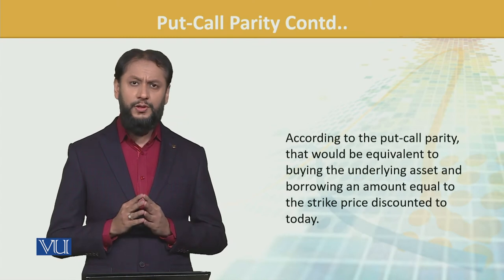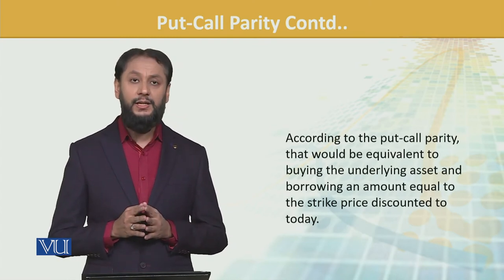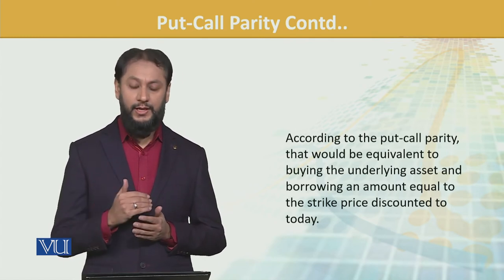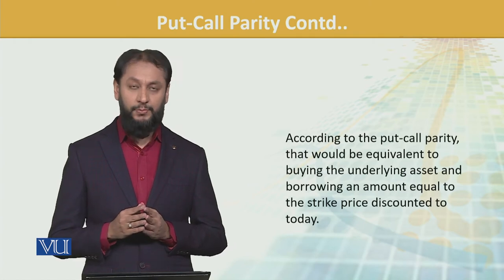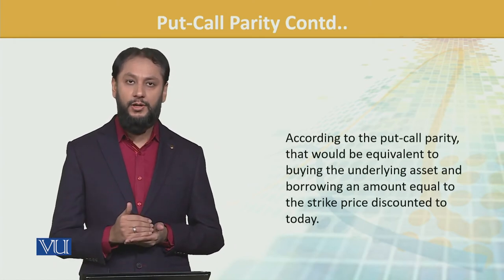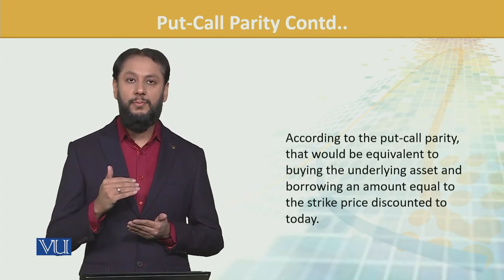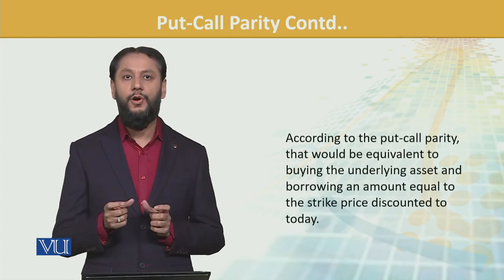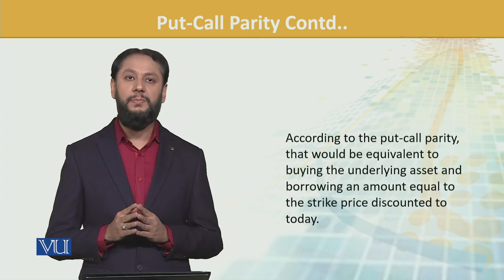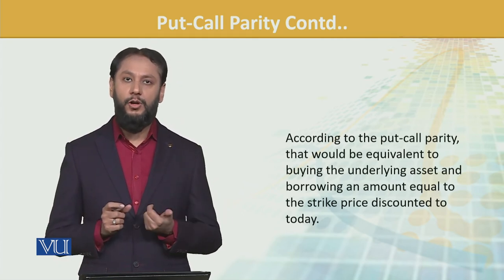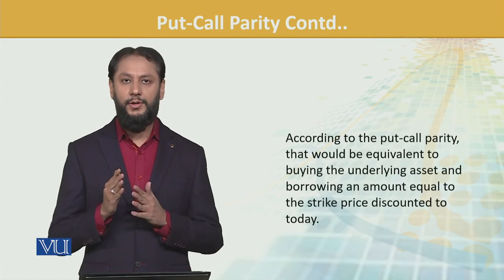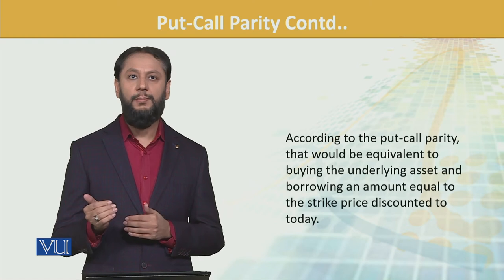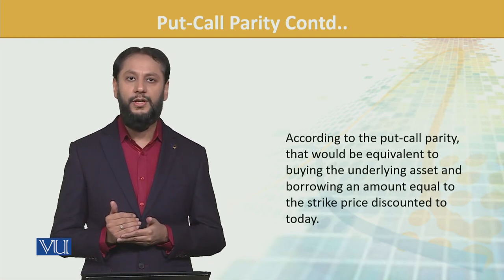According to put-call parity, this would be equivalent to buying the underlying asset and borrowing an amount equal to the present value of the strike price discounted today. The first component is: bought the call option, sold the put option. The second component is: bought the stock and borrowed the present value of the strike price.